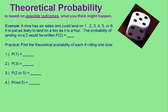Probability can also be based on what you think might happen. We call this theoretical probability. For example, a dice has six sides. It could land on a 1, 2, 3, 4, 5, or 6.